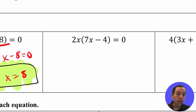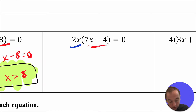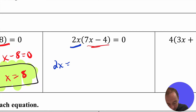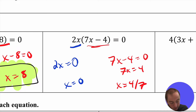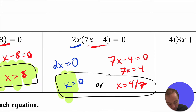Basically the same thing is happening here: you have the product of a blue factor and a red factor equal to zero. Either the blue or the red has to be zero. If 2 times x has to equal zero, then x itself has to be zero. It could also be that 7x minus 4 equals zero — add 4 to both sides then divide by 7 — giving x equals 4 sevenths as the other solution.